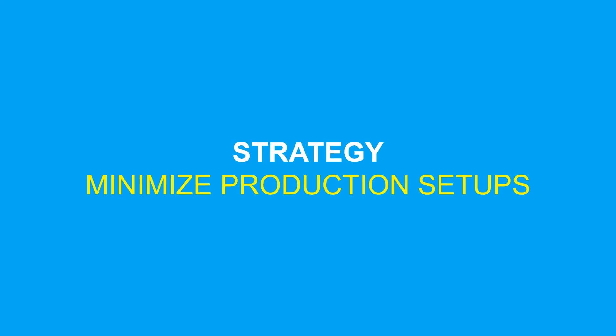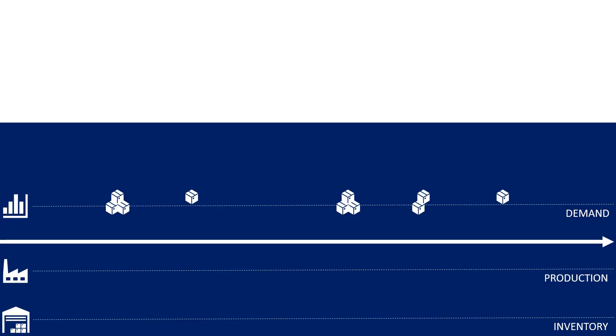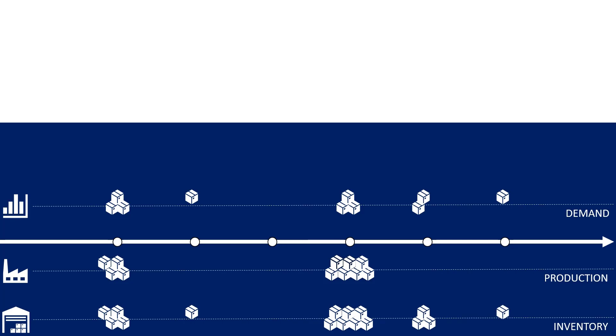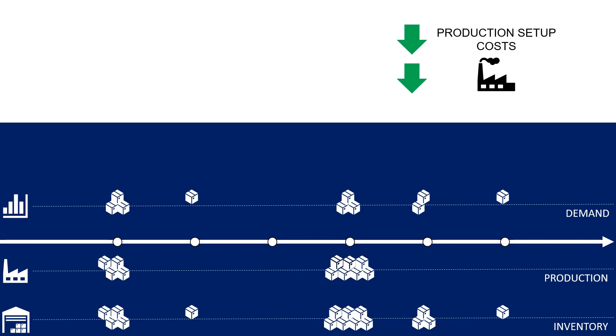The next strategy is to minimize the number of production setups. In this example, you will see that you build stock two times. The quantity produced per setup is used to meet the demand for several months. So your production setup costs are drastically diminished because you only set up two times, but your holding costs are exploding — especially after the second setup where you have a huge stock. So to conclude, you need to find the balance between these two extreme strategies.